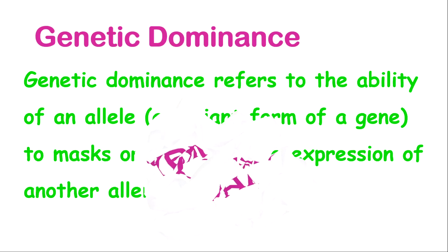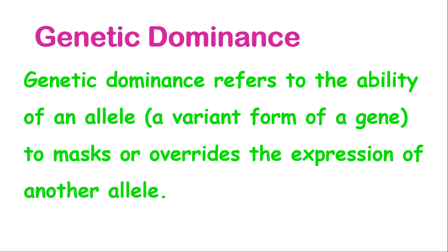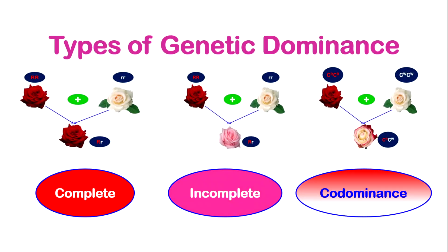Genetic dominance refers to the ability of an allele, which is a variant form of a gene, to mask or override the expression of another allele. There are three types of genetic dominance: complete dominance, incomplete dominance, and co-dominance.